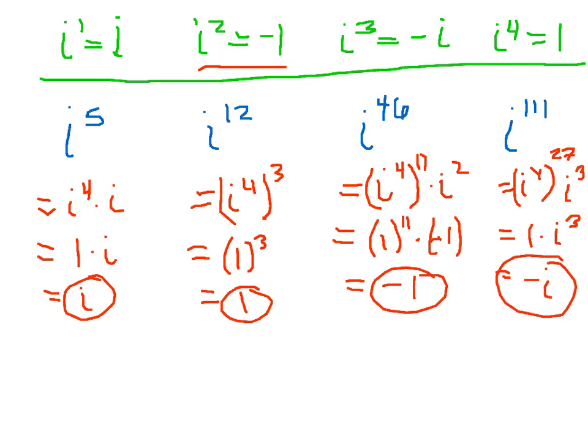So this shows that any power of i can be reduced to one of those four things: i, negative 1, negative i, or 1.